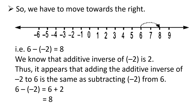Starting from 6 and moving two steps to the right, we reach at 8. That is, 6 minus minus 2 is equal to 8. This also means that when we subtract a negative integer, we get a greater integer. We know that the additive inverse of minus 2 is 2. Thus, adding the additive inverse of minus 2 to 6 is the same as subtracting minus 2 from 6. We can write: 6 minus minus 2 is equal to 6 plus 2 is equal to 8.